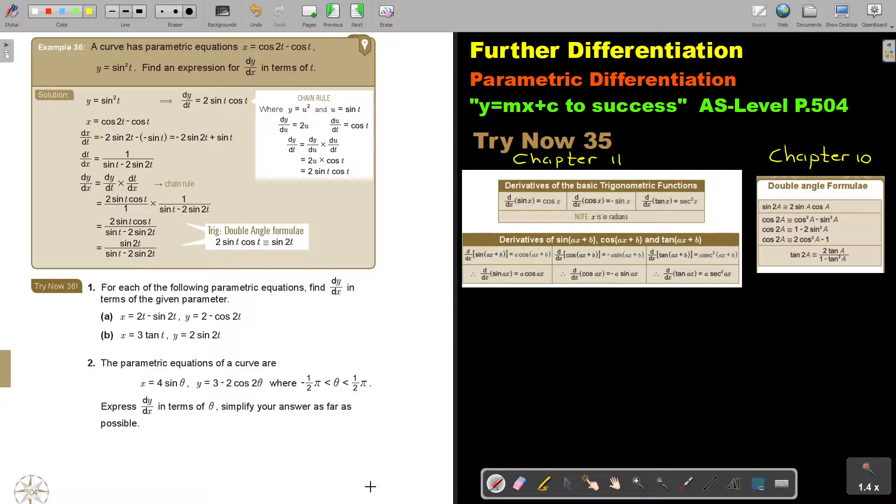In this video, we will continue with parametric differentiation. You will find this on page 504 in the Namibia AS level mathematics textbook y equals mx plus c to success.